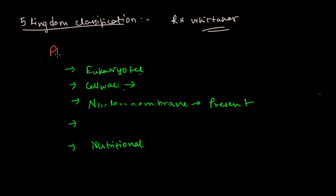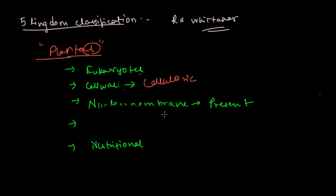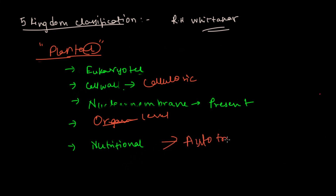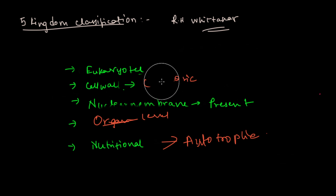Moving on to Plantae: the cell wall is cellulosic — we all know that. They are eukaryotic, and nuclear membrane is present. They have organ level of organization — organ system level is not present, only organ level of organization. The mode of nutrition is autotrophic — no heterotrophic mode of nutrition. Autotrophic mode of nutrition is present in Plantae.